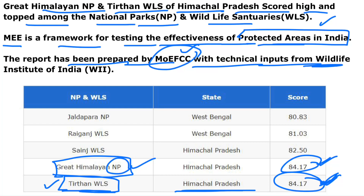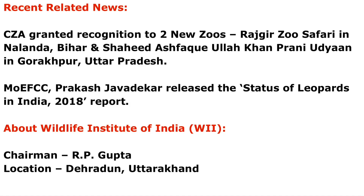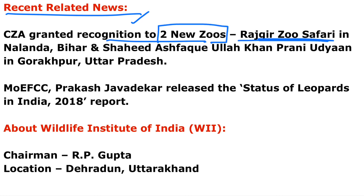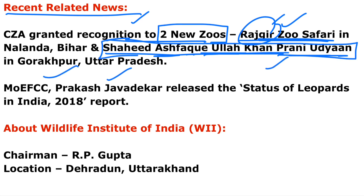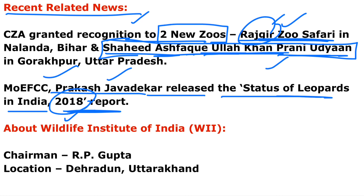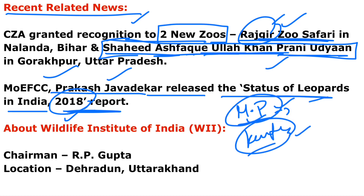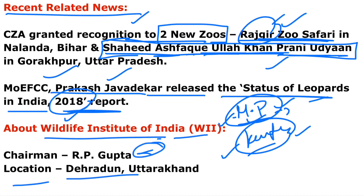The MEE is a framework for testing the effectiveness of protected areas in India. The report was prepared by the Ministry of Environment, Forest and Climate Change with technical inputs from the Wildlife Institute of India, headquartered in Dehradun, Uttarakhand. Recently, two new zoos were added: Rajgir Zoo Safari in Bihar and Shaheed Ashfaqulla Khan Prani Udyan in Gorakhpur, Uttar Pradesh. In the leopard report (2018), Madhya Pradesh topped, followed by Karnataka — same ranking as tigers.